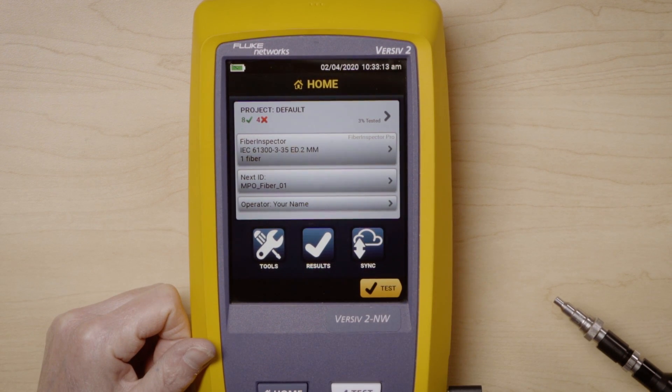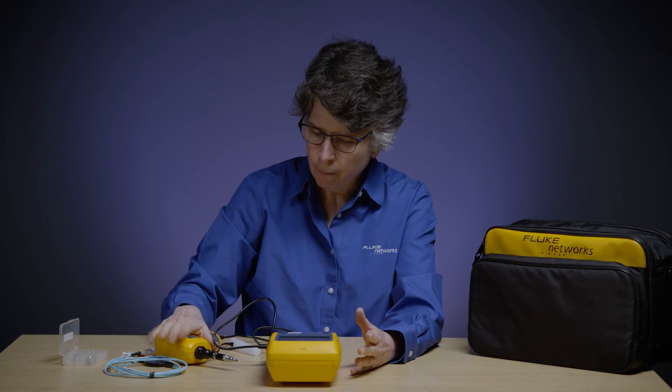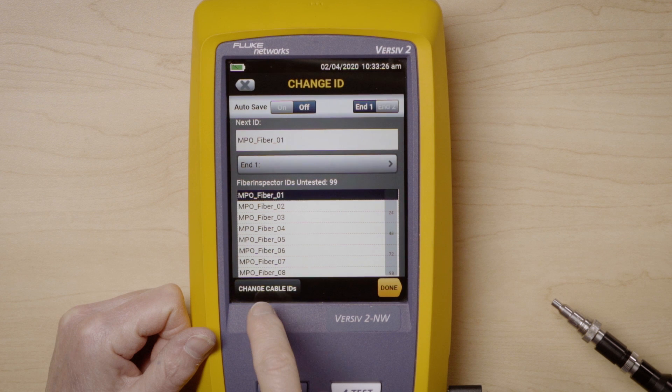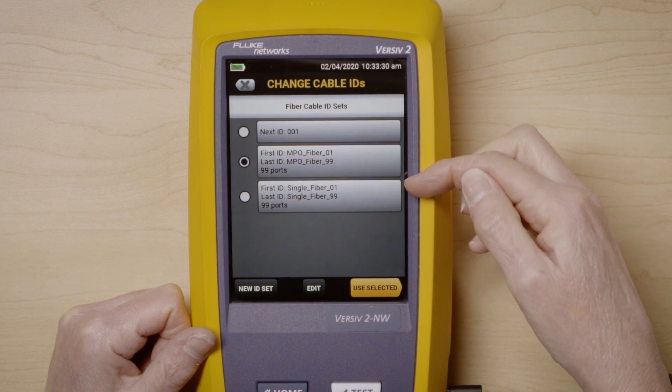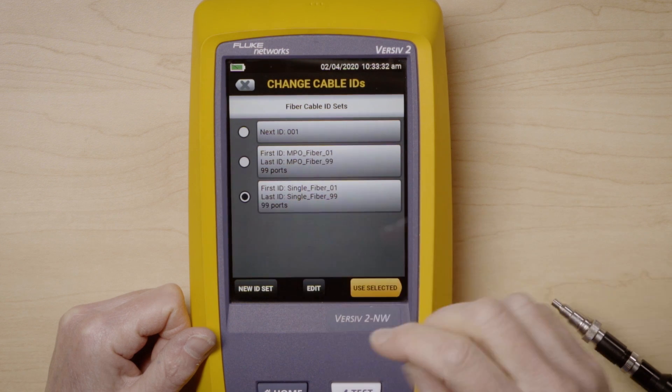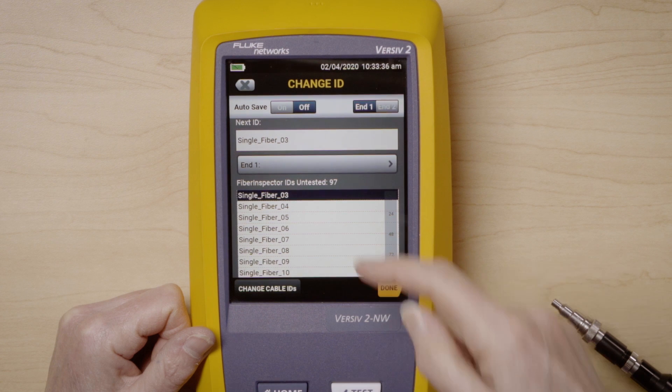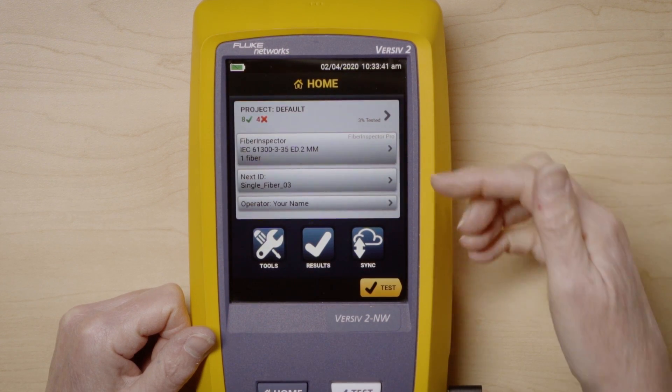The only other thing I might want to do is change my cable IDs. Right now, the cable ID is set up for MPO because, again, the Fi3000 will do both MPO or single fiber interfaces. I've already set up a different cable ID, so I'm going to change it to single fiber 01 through 99 and say use selected. Which one am I starting on? I'm going to start on 3, so I'm going to say done. And now I'm all set up.